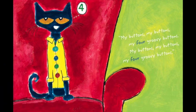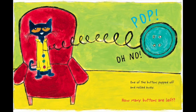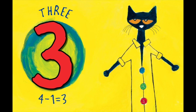My buttons, my buttons, my four groovy buttons. My buttons, my buttons, my four groovy buttons. Pop! Oh no, one of the buttons popped off and rolled away. How many buttons are left? Three. Four minus one equals three.